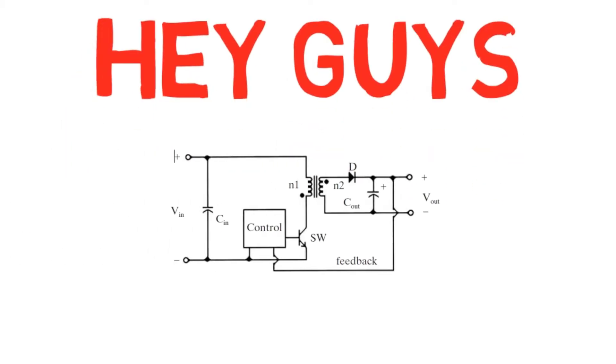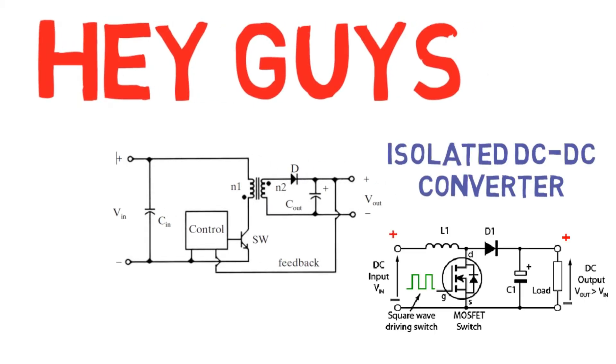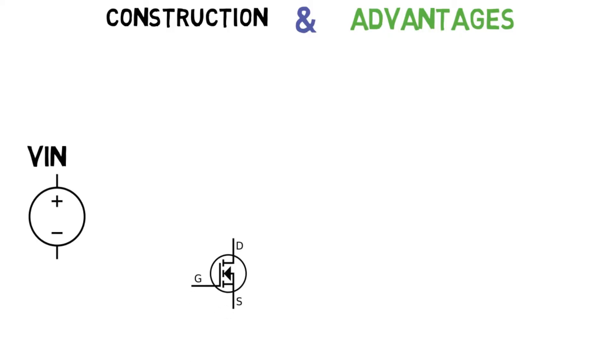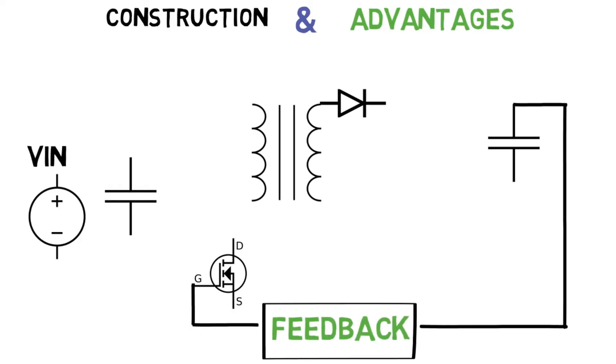Welcome. This time we are going to design a flyback converter. It is an isolated type of DC to DC converter and it is derived from the boost converter. Let's start with the construction of the converter and simultaneously discuss its advantages. DC voltage is supplied to the input side of the converter through a rectifier and filter. It consists of an active switch, a transformer, a freewheeling diode, and a filter capacitor. Due to these very few amounts of circuitry, it is cost effective and efficient.